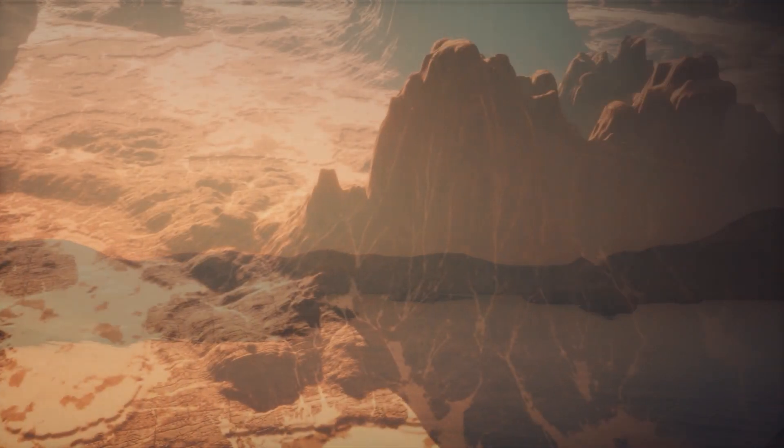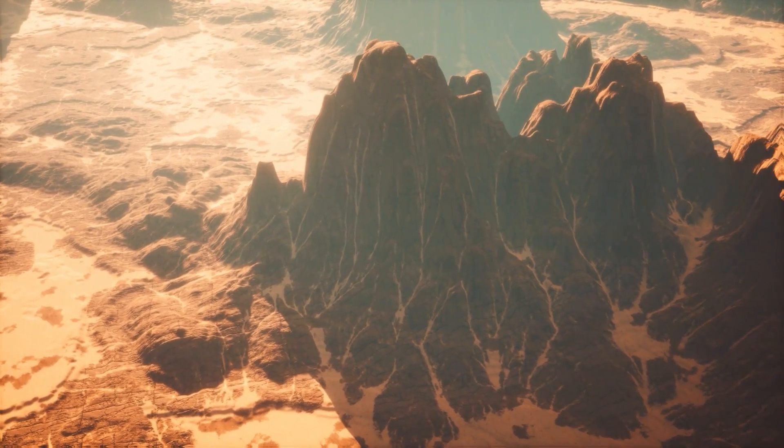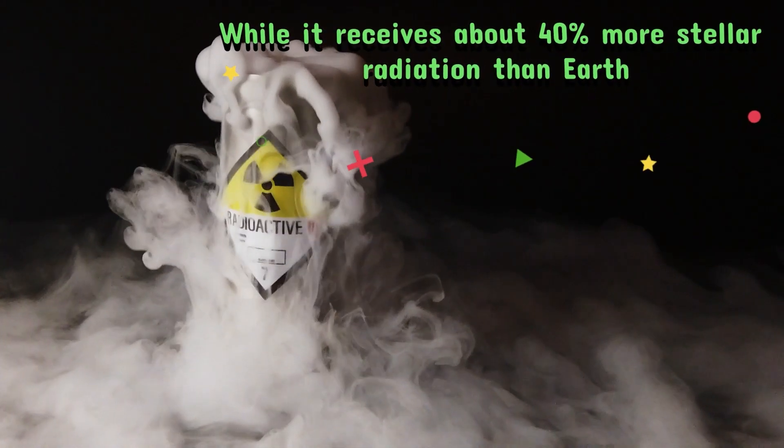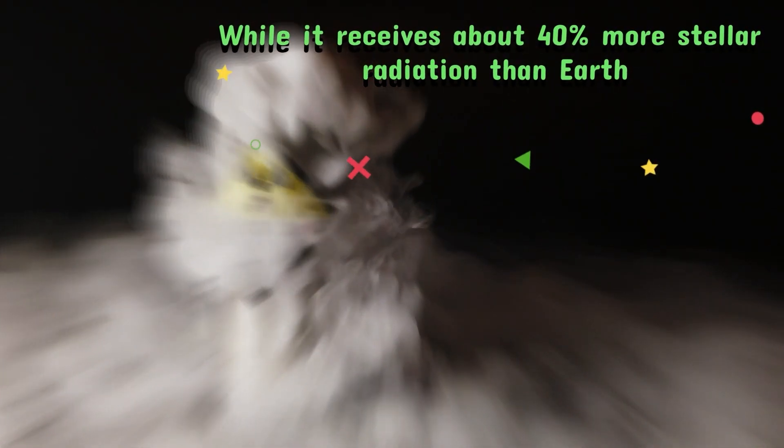Habitability potential. One of the most compelling aspects of Kepler-725c is its location within the habitable zone. While it receives about 40% more stellar radiation than Earth, this doesn't rule out habitability. Several factors could moderate the climate.